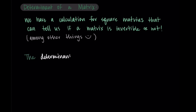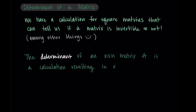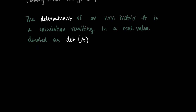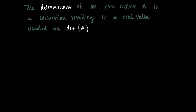We say the determinant of an n by n matrix A is a calculation resulting in a real value, and we denote that operation as det(A). What the determinant does is dependent on the size of the matrix, but it follows a basic algorithm.